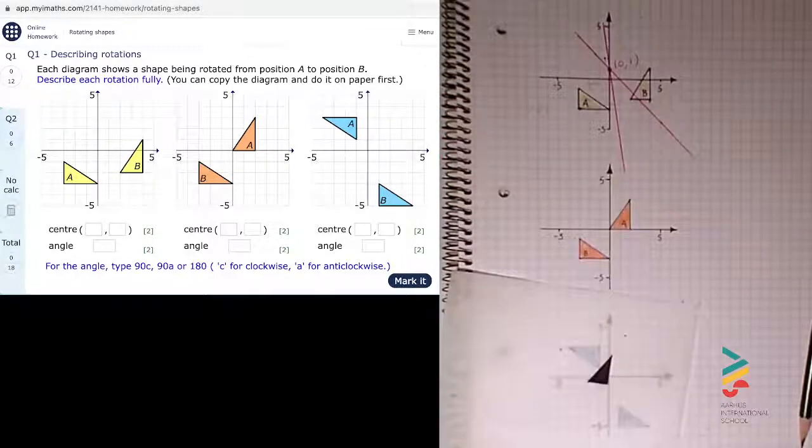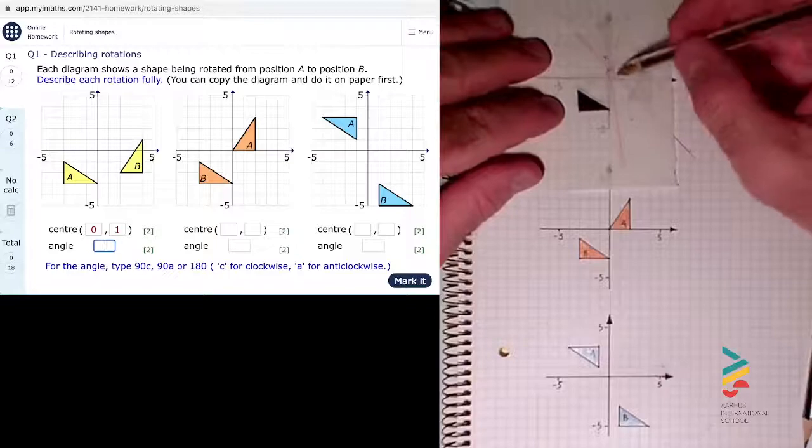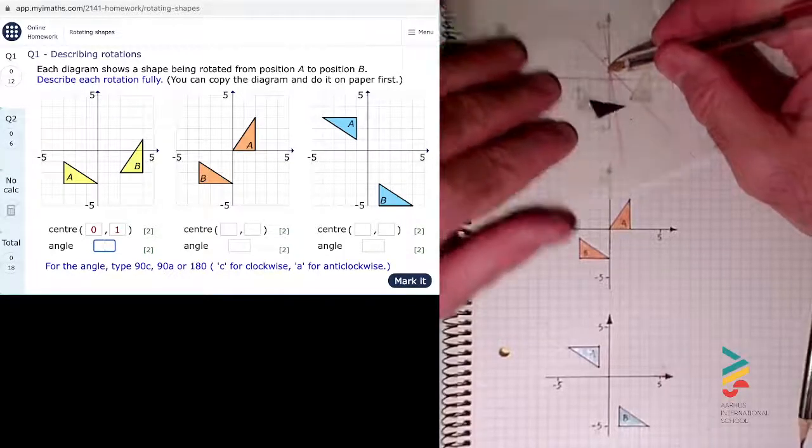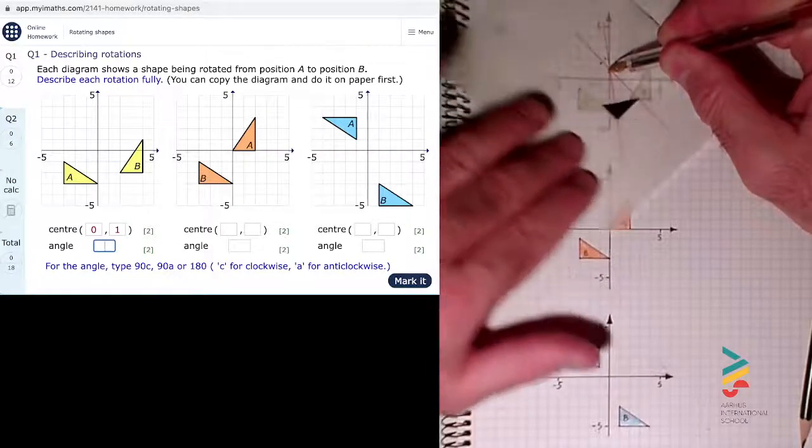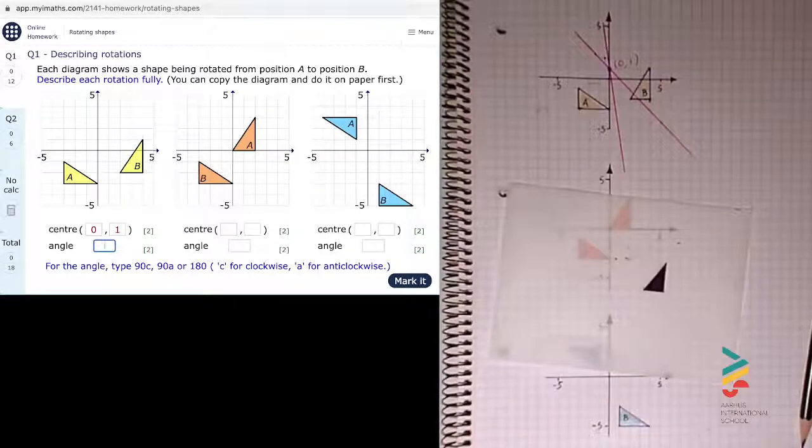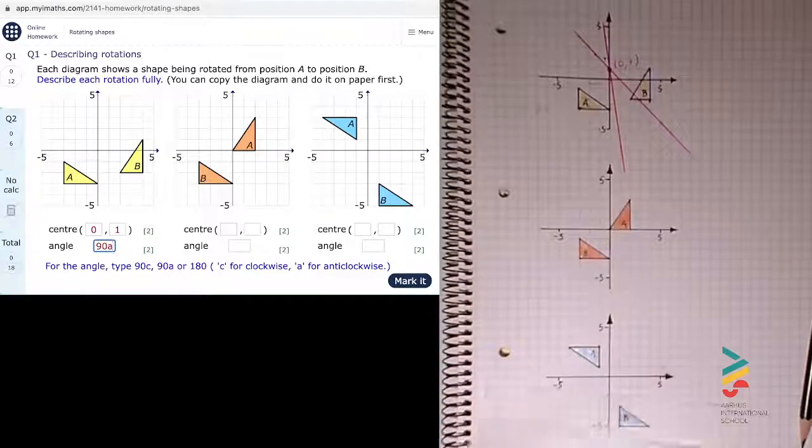So on the iMaths, the center of rotation was 01. I'll just type in 01 as the center of rotation. And then the angle, I can choose between 90 clockwise, 90 anti-clockwise or 180. So it's gone 90 degrees anti-clockwise actually. Did I say clockwise earlier? From A to B, that's going 90 degrees anti-clockwise. So I'm going to type in 90A for 90 anti-clockwise.